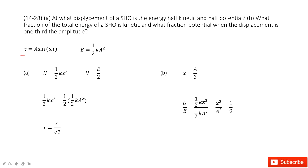The first part asks us to find the displacement when the energy is half kinetic energy and half potential energy. That means the potential energy u equals one half k x squared, and we need to make this u equal to half of the total energy. So the potential energy equals half of the total energy, and we solve to get the displacement x equals A over square root 2.